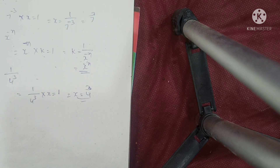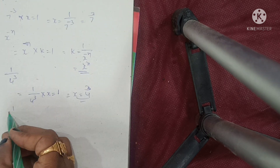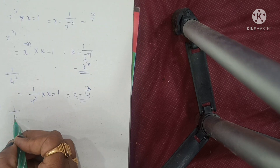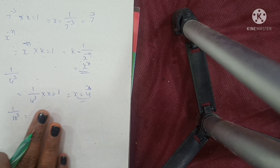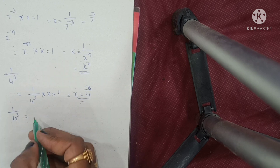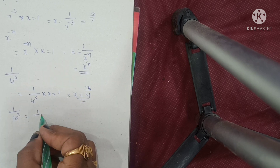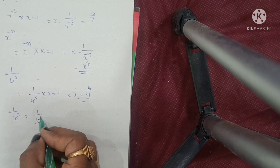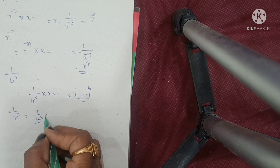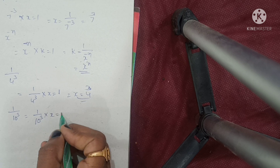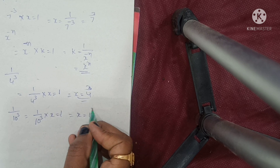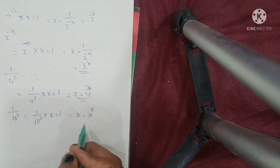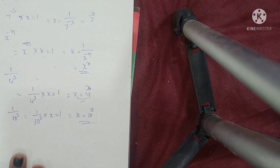Last one: 1 by 10 power of 3. Same process — (1/10^3) × x = 1, so x = 10 to the power of 3. Simple.